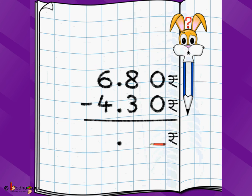One last problem, 6.80 rupees minus 4.30 rupees we write everything like this, point then digits after decimal and we write the unit also here. So, we start from here on the rightmost place, 0 minus 0 is 0, 8 minus 3 is 5, 6 minus 4 is 2.